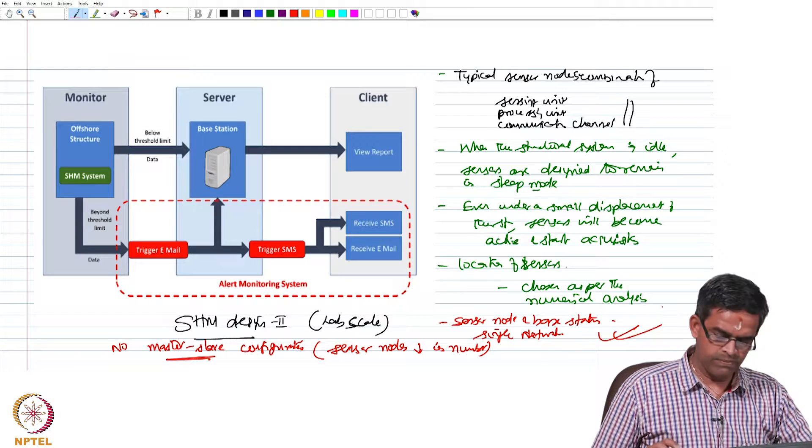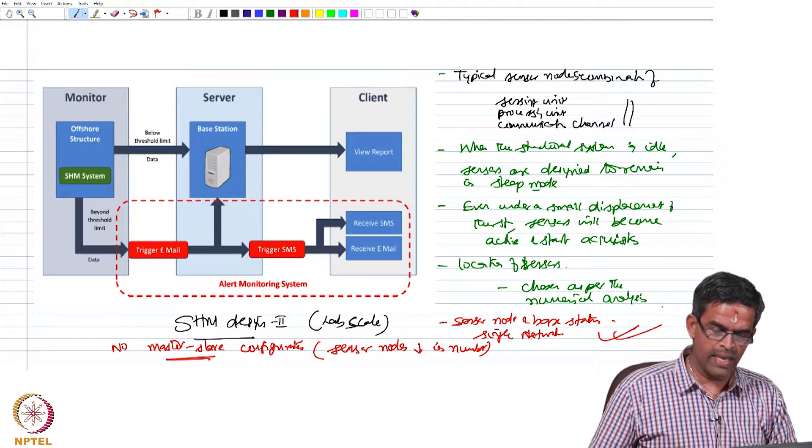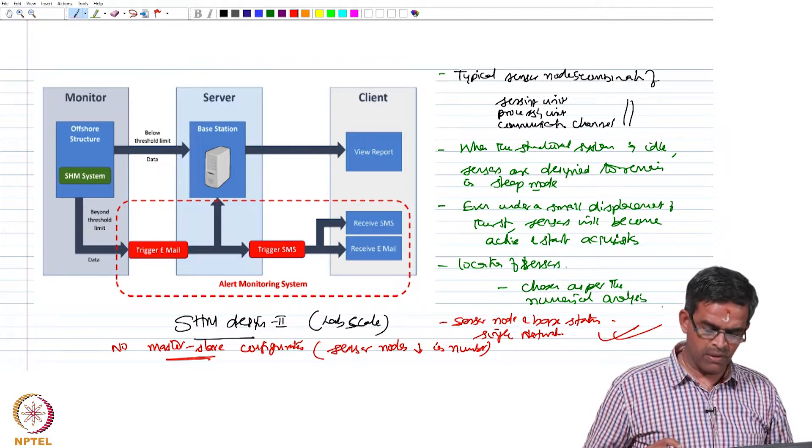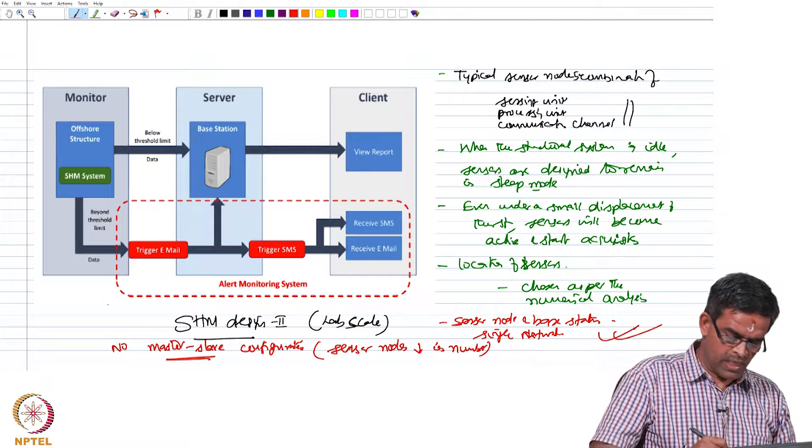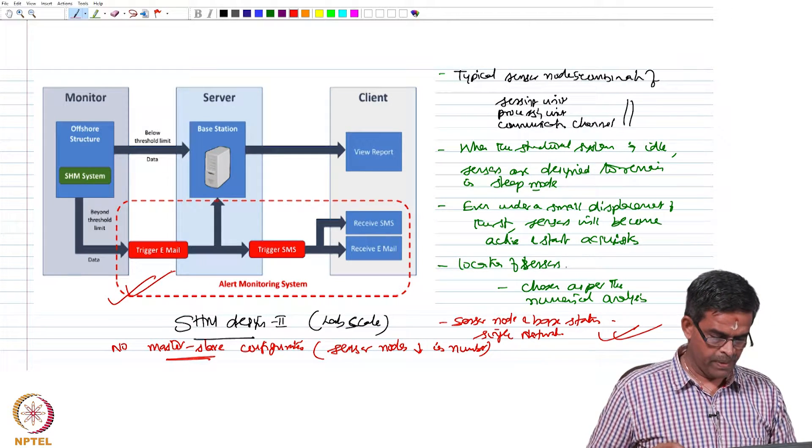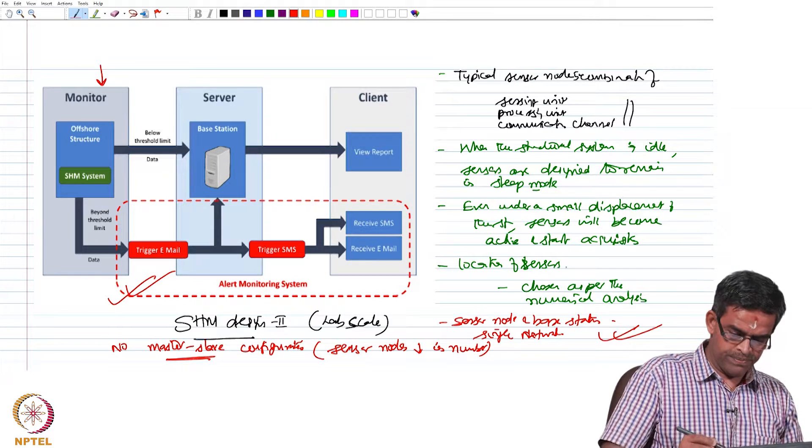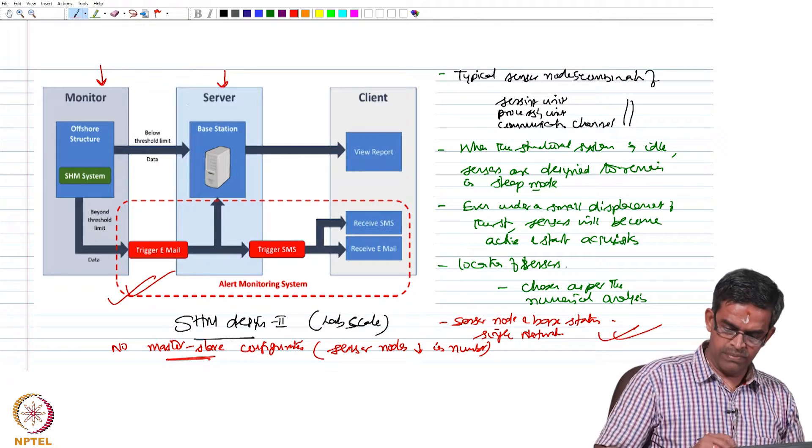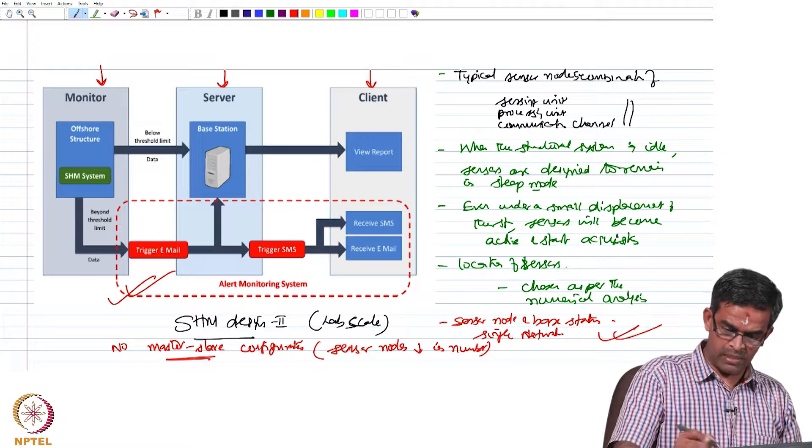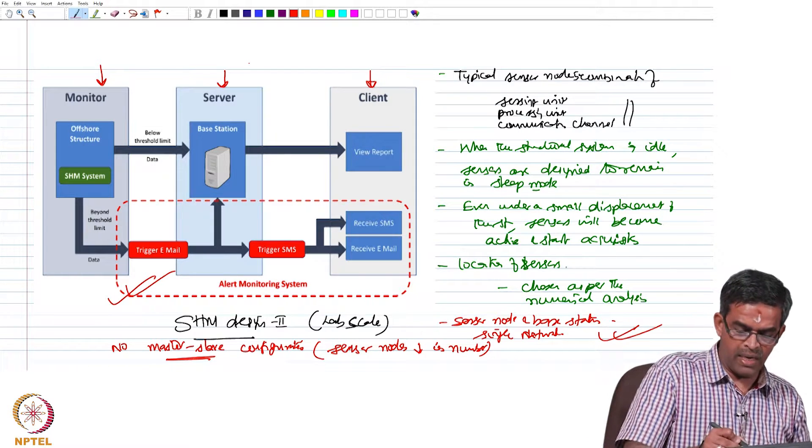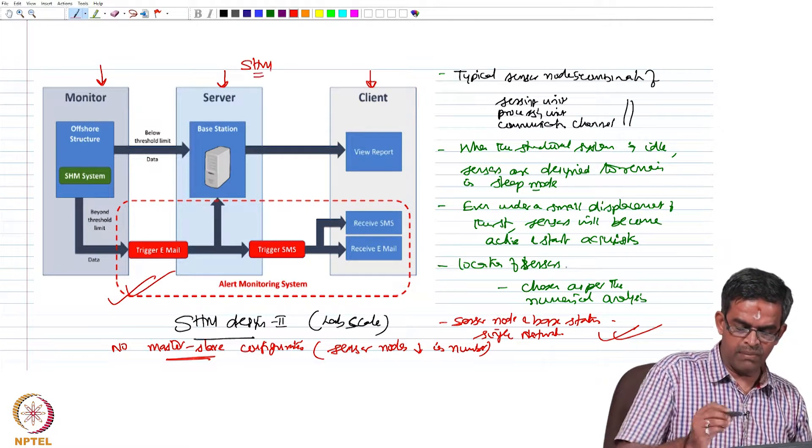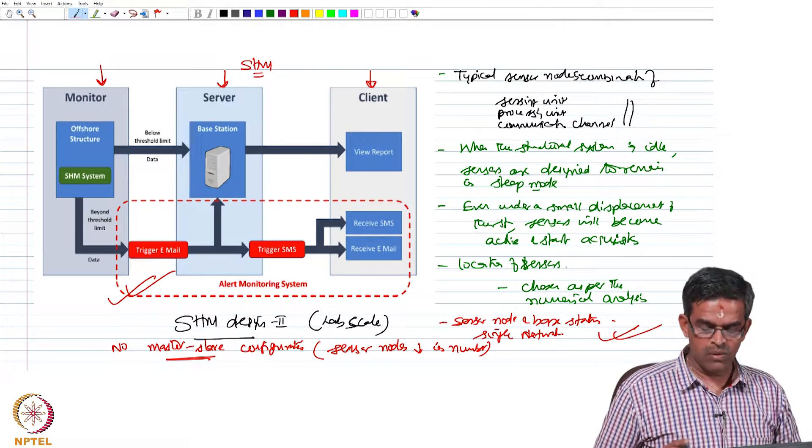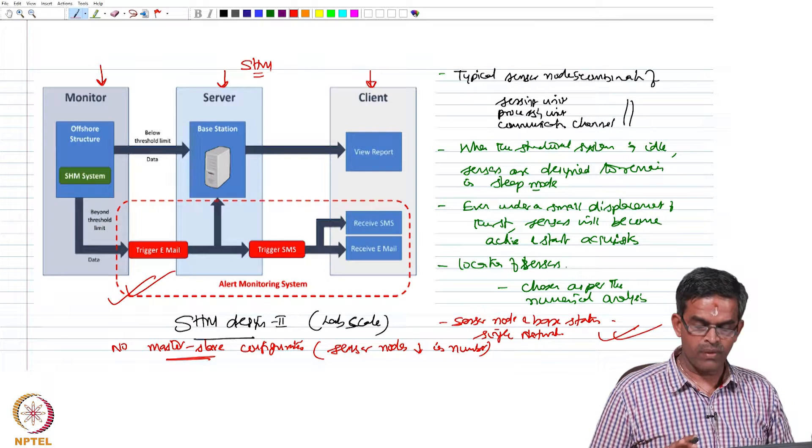If you look at this figure which is talking about the layout, there is an additional system we have generated, which is the alert monitoring system. You monitor the system, communicate to the server, then get the report on the client server. This is a standard system for SHM which can be applicable to real-time monitoring.